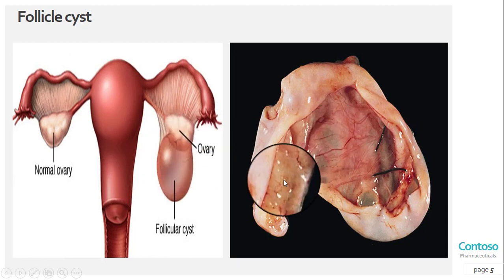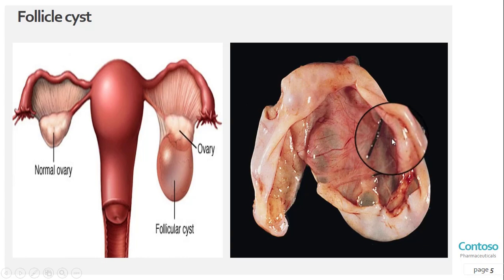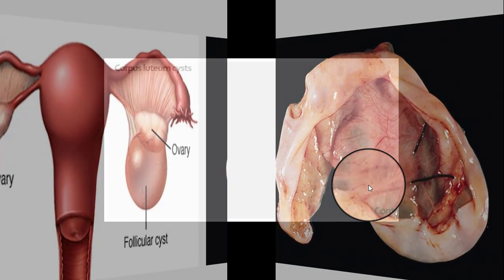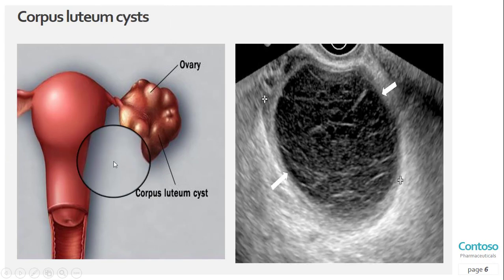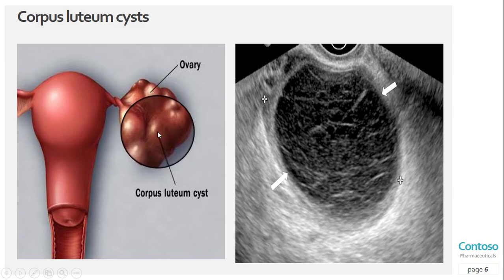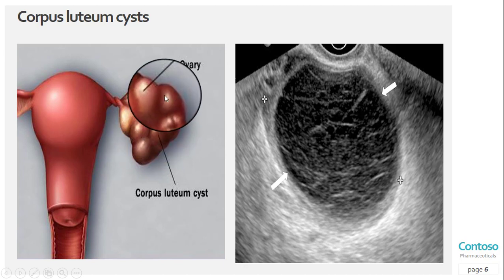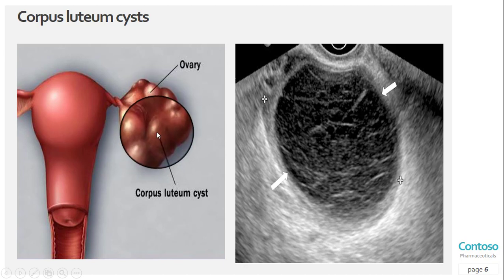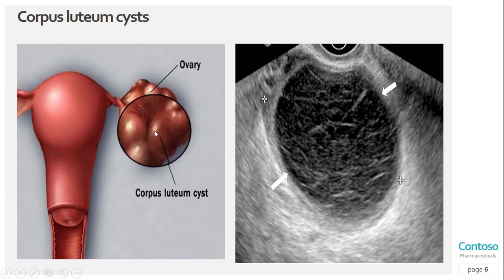If the follicle doesn't break open, the fluid inside can form a cyst on the ovary — this is called a follicular cyst. The second type is the corpus luteum cyst. After releasing an egg, if the sac doesn't dissolve and the opening of the follicle seals, additional fluid can develop inside the sac. This accumulation of fluid causes a corpus luteum cyst.